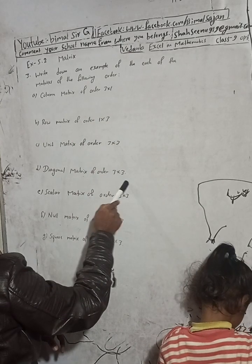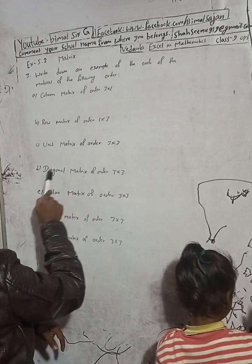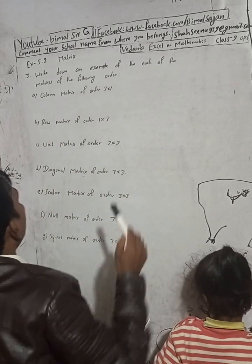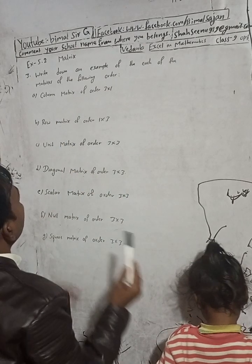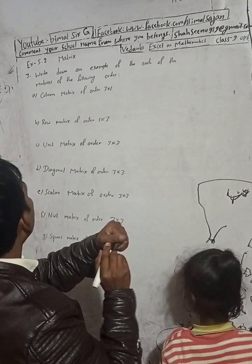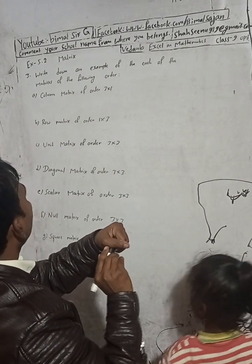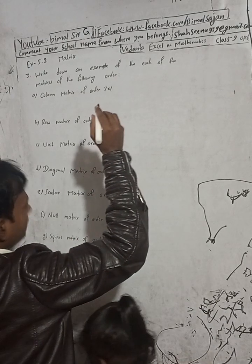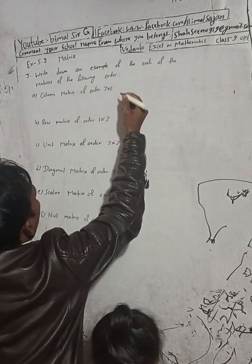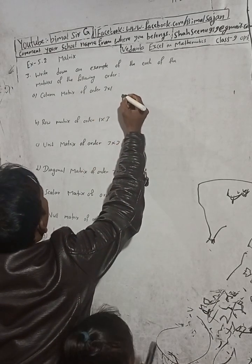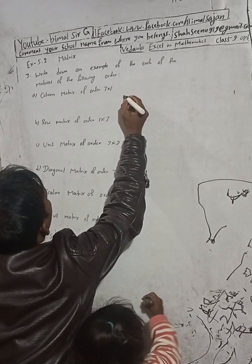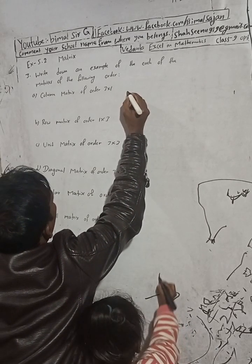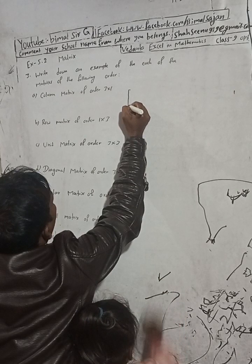The first one is the column matrix of order 3 into 1. Write down an example — the column matrix of order 3 into 1.